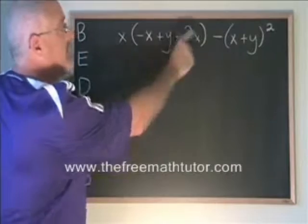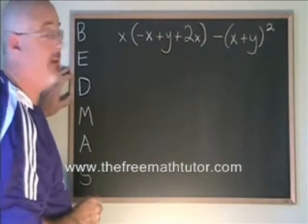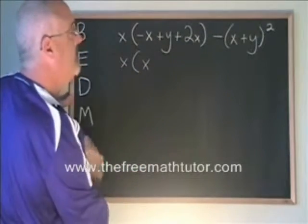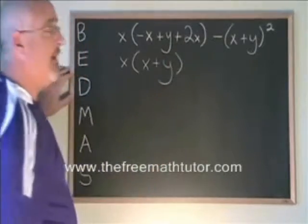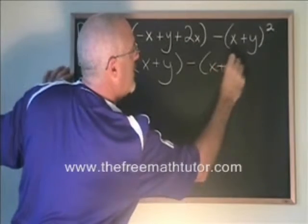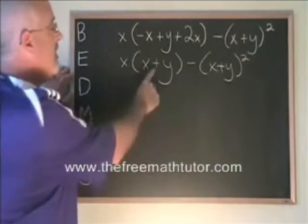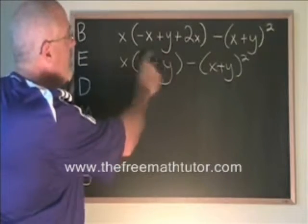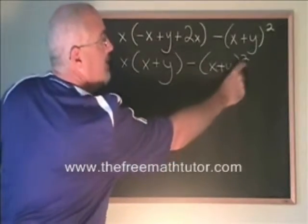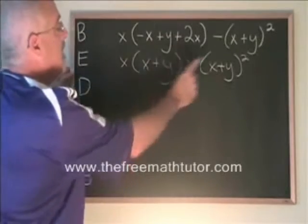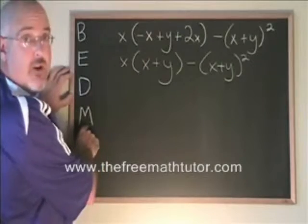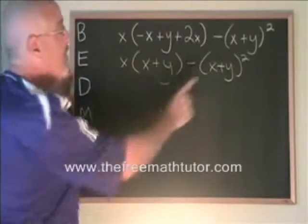The first thing we are supposed to do in BEDMAS is bracket. We will start with this leftmost bracket and we will try to combine similar terms inside of it. Negative x plus 2x is x. We write down the plus y and close our bracket. This bracket can no longer be simplified. It's just there because we have a multiplication. And this bracket cannot be simplified inside. It's there because we have a squared binomial. The squared binomial is exponent, and it comes before multiplication in BEDMAS. So we're not doing this multiplication yet. We're doing the squared binomial first.